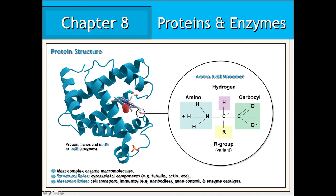Protein molecules are composed of subunits or monomers known as amino acids. An amino acid consists of a central or alpha carbon associated with two functional groups: an amino group and a carboxyl group. Although all 20 naturally occurring amino acids are identical in this regard, they are distinguished from one another by their R or variable groups, which determine the unique chemistry of each amino acid molecule.